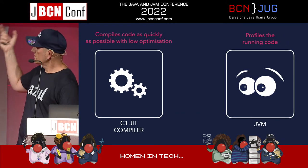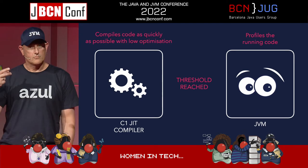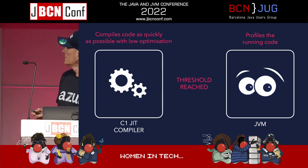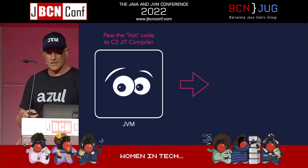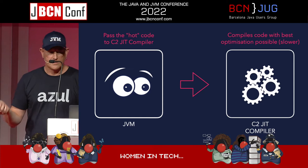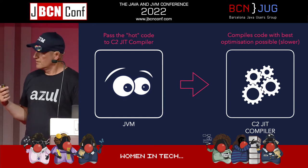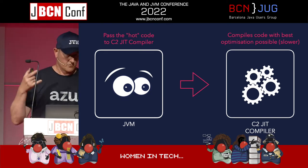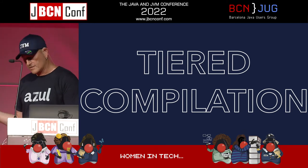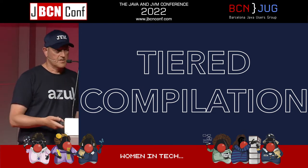Once it's C1-compiled code, the JVM is again watching and profiling it. If this code was called many times - maybe a thousand, maybe ten thousand, there are thresholds - it takes that hot code and passes it to the C2 compiler. The C2 compiler, formerly known as the server compiler, is slower but creates more optimized code. This is called tiered compilation, which started in JDK 7 and became the standard in JDK 8.